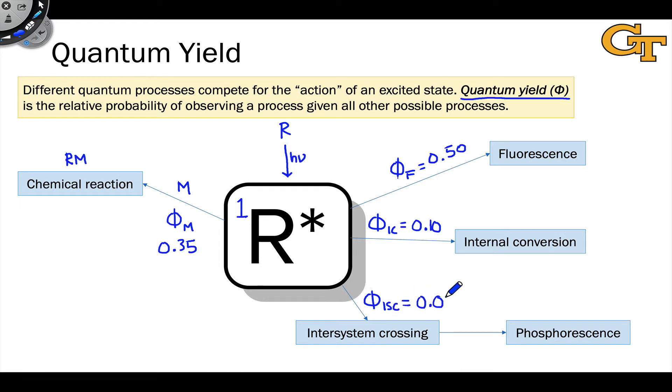And this is an important point. The sum of all of the quantum yields proceeding from a given excited state for all the possible processes that can take place, let's say n is the full set of processes, has to equal one. This is just the rules of probability coming into play.